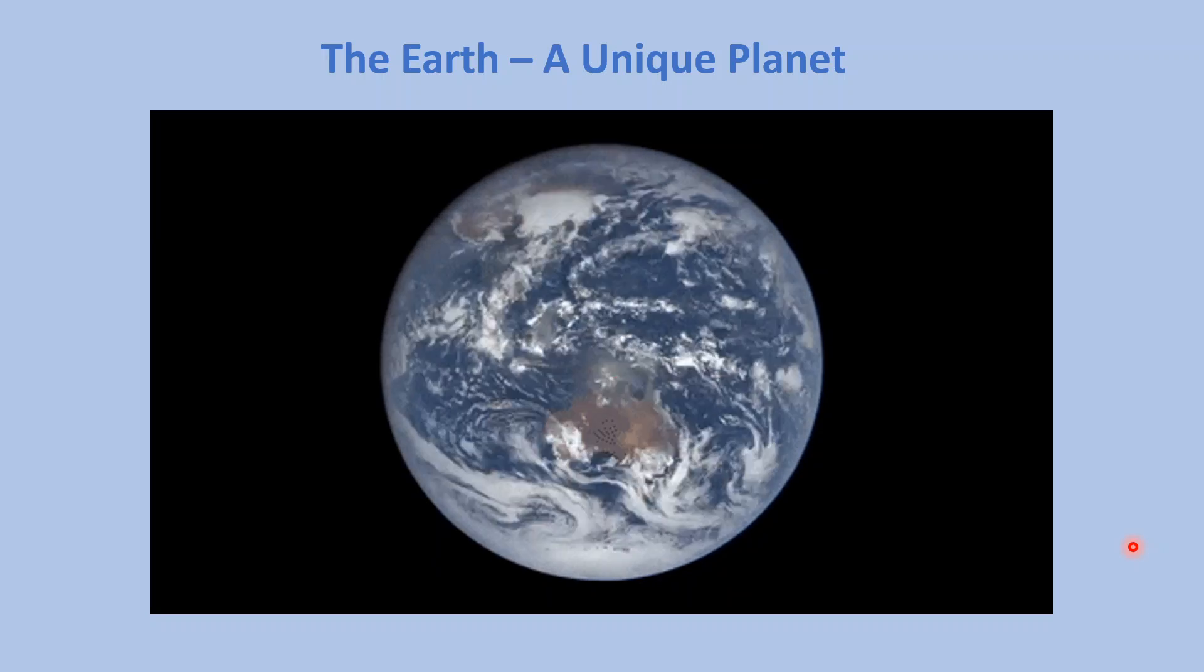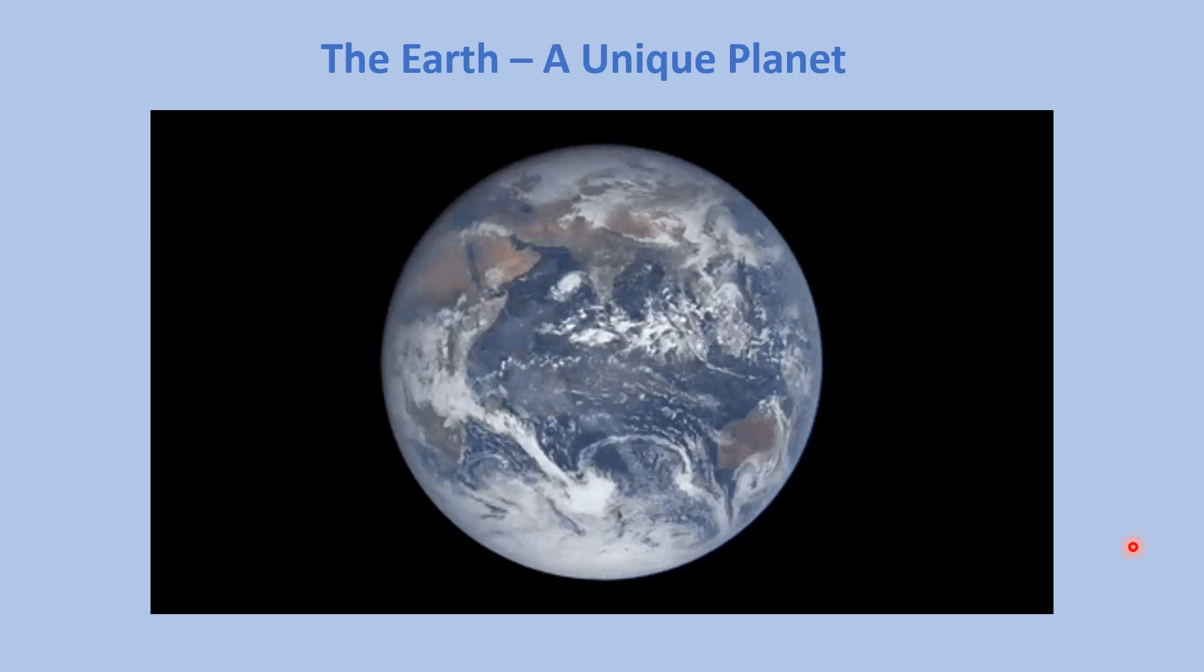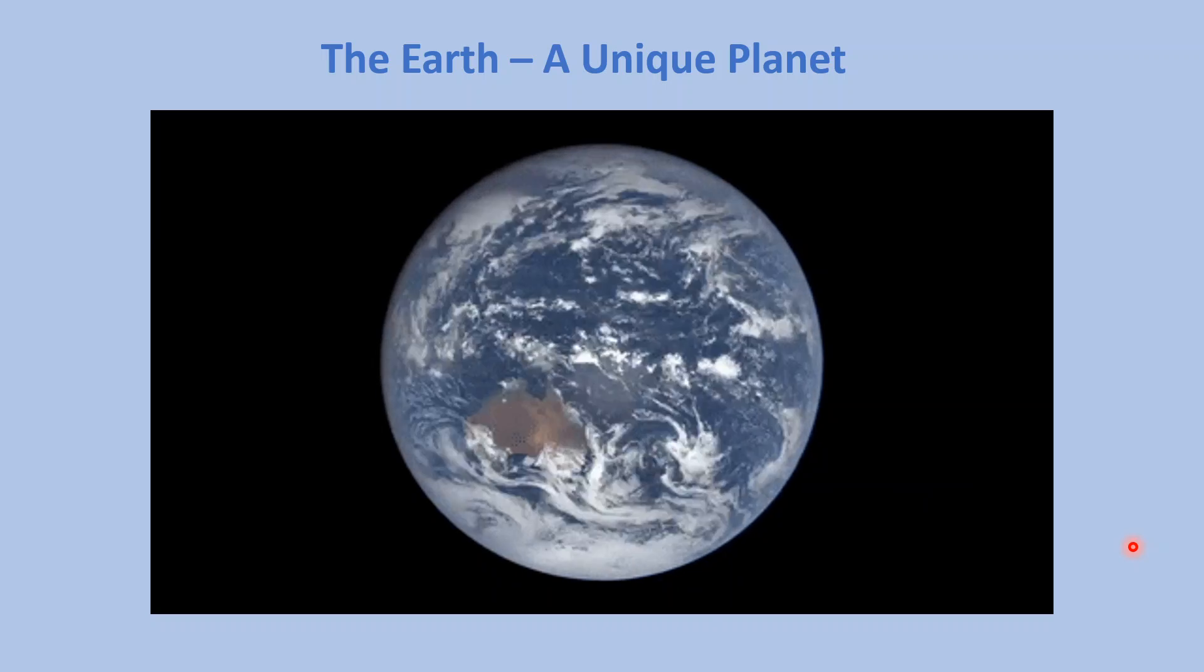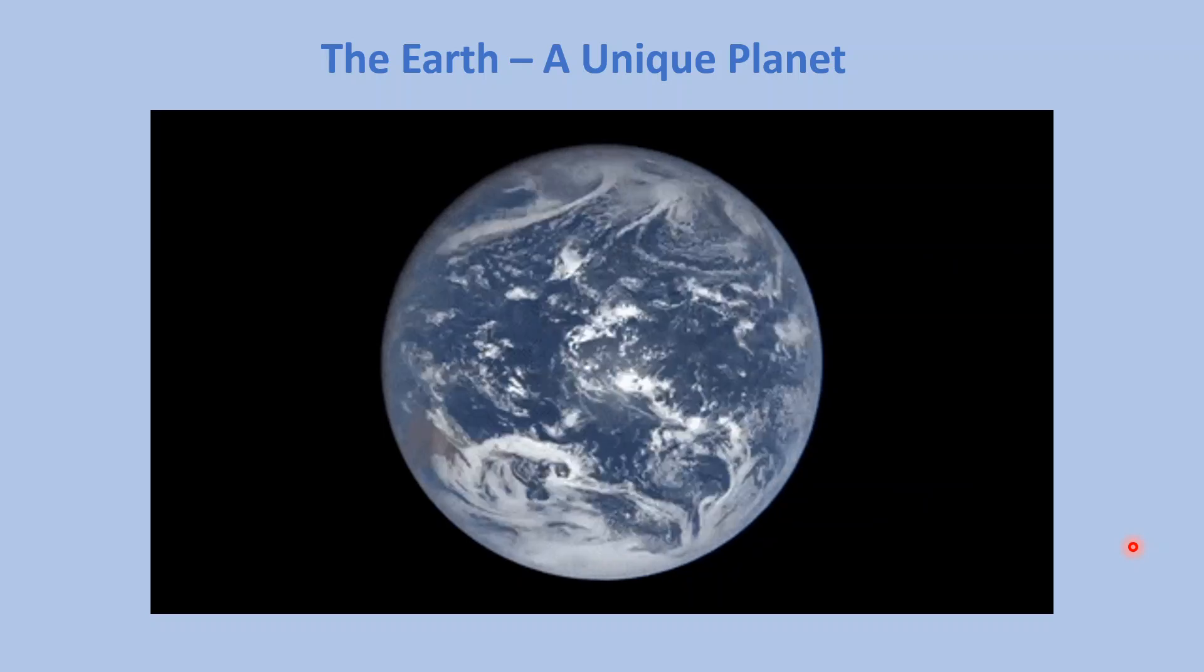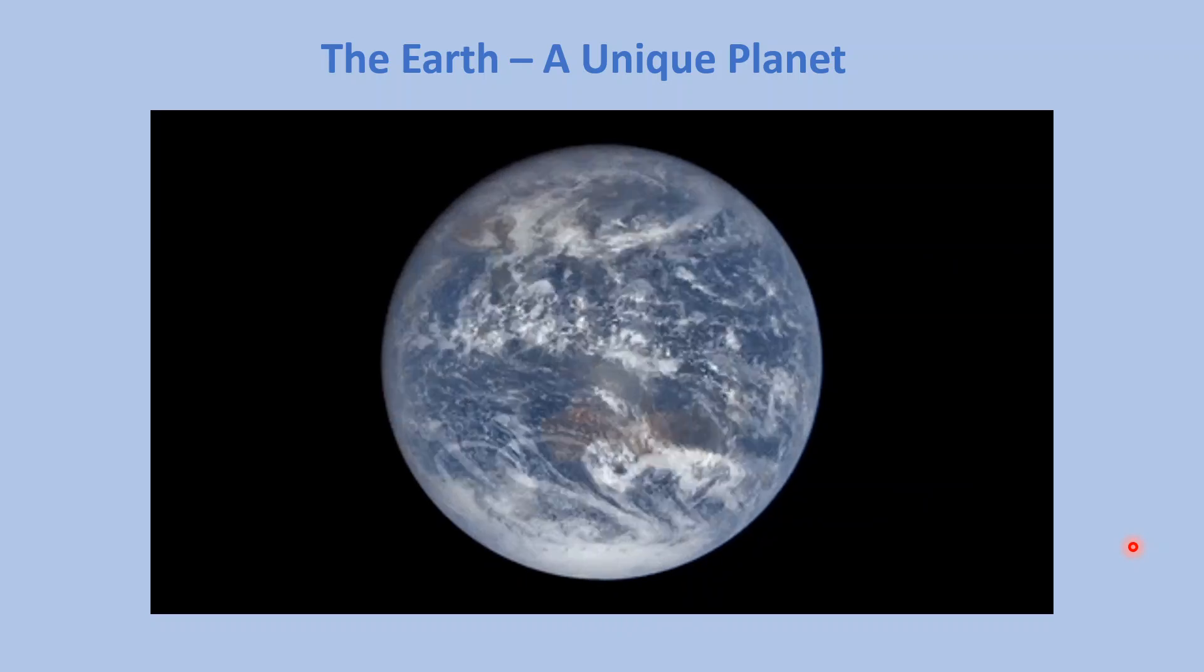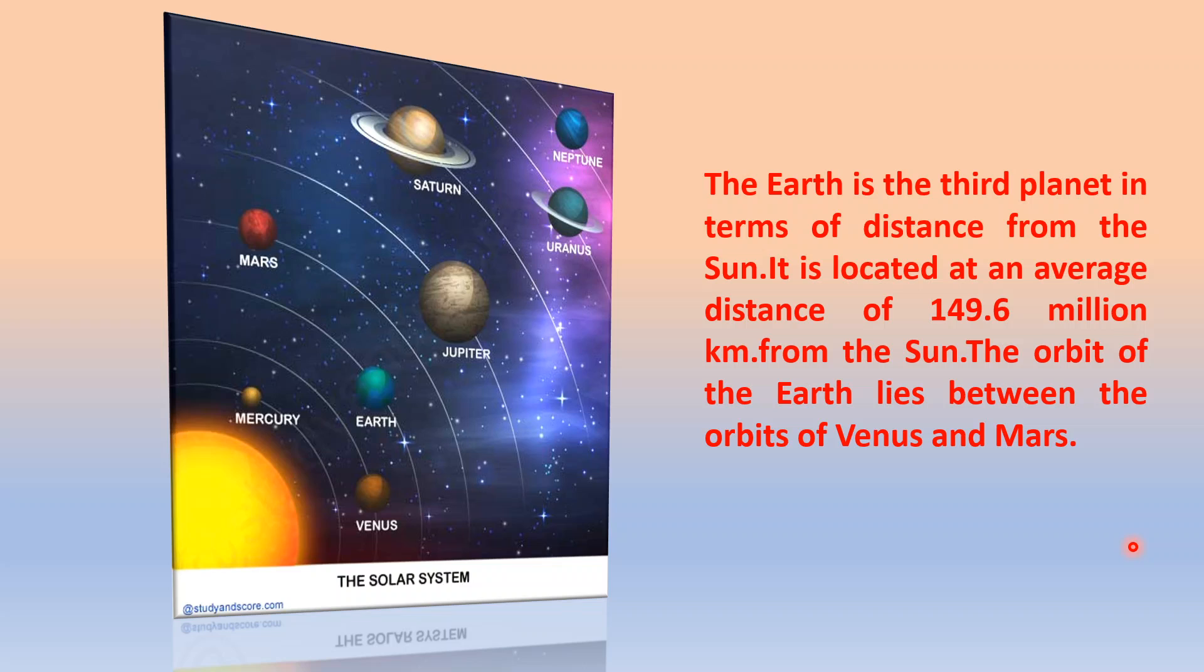It is believed by most scientists that the universe came into existence as a result of the Big Bang which occurred about 15 billion years ago. The solar system or the sun's family includes eight planets of which the Earth is a part.